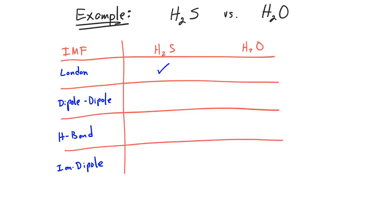When comparing dipole-dipole forces, H2O has an unfair advantage. H2O can hydrogen bond, which is a special case of dipole-dipole forces. Even though hydrogen sulfide has a dipole-dipole force, the fact that water can hydrogen bond means that water is going to have the stronger force. Neither of the molecules are capable of ion-dipole forces because neither molecule is an ion.